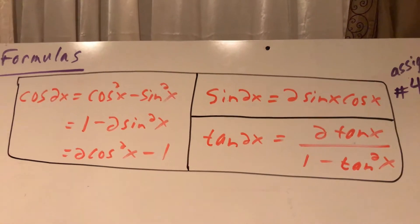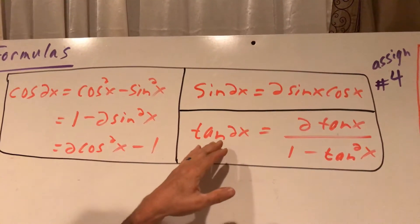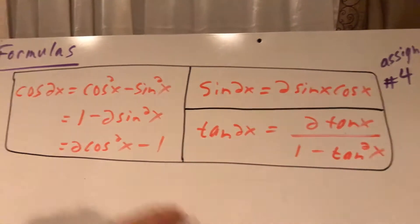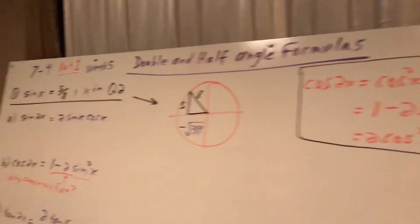So we're kind of just substituting it. You'll notice that sine has one option for it, tangent of 2x has one option, but cosine of 2x you have three different choices and we'll talk about how I choose that particularly one I chose for the problem we're doing.